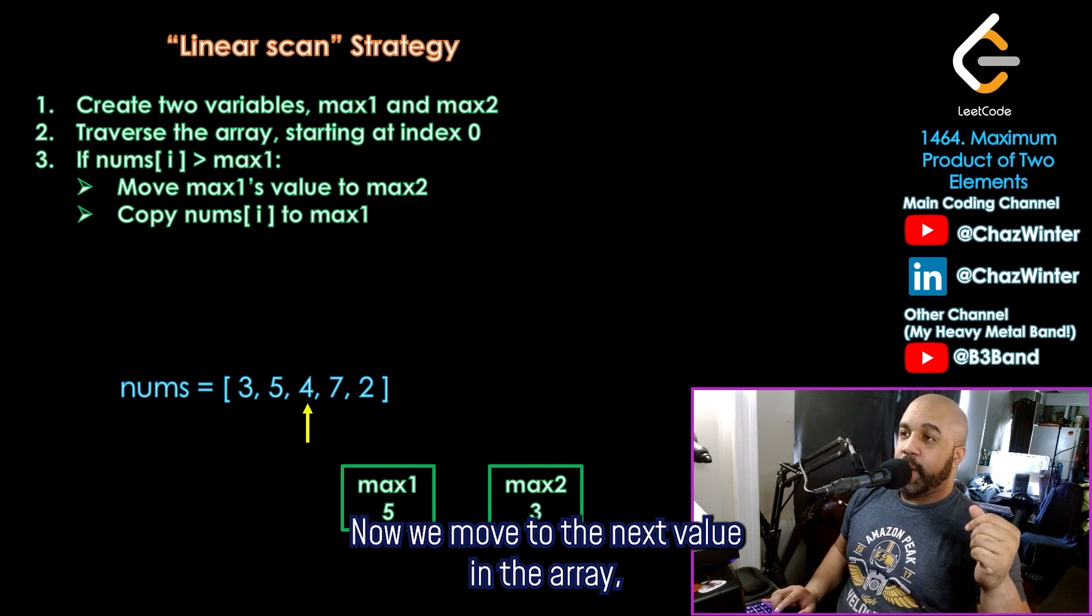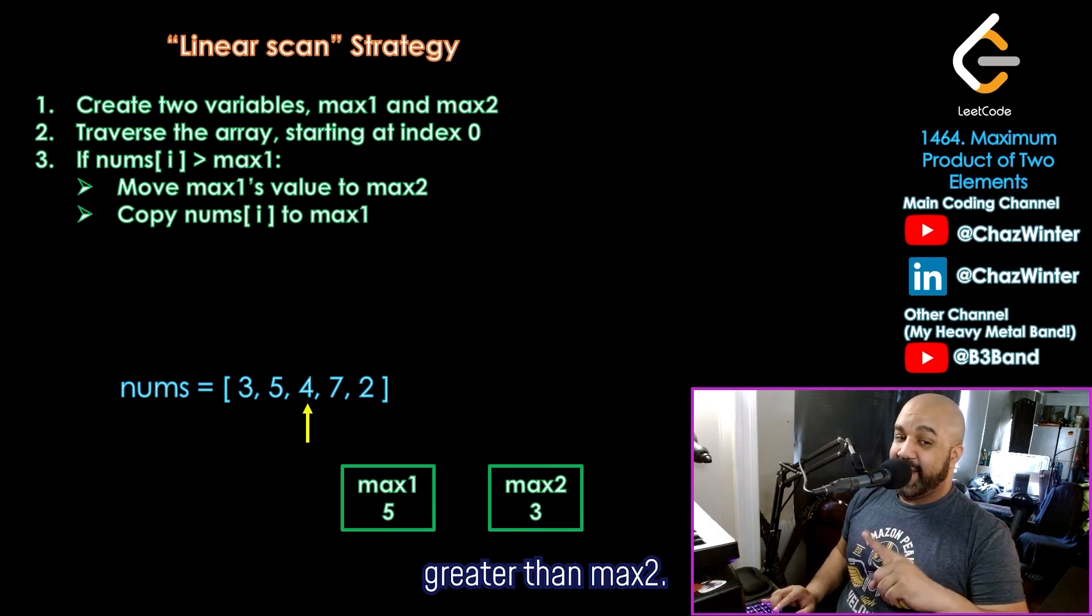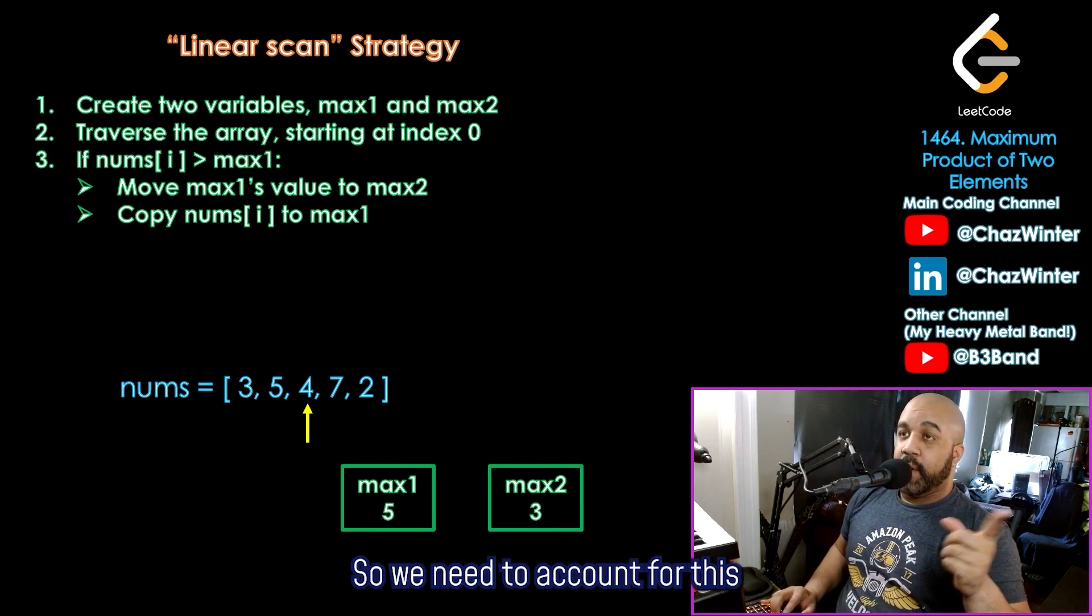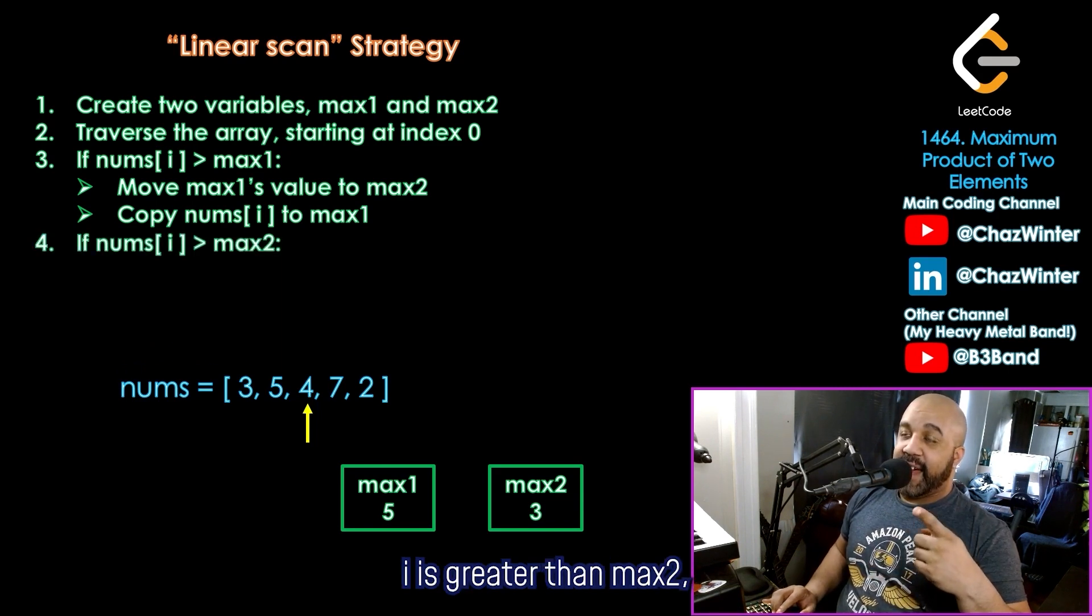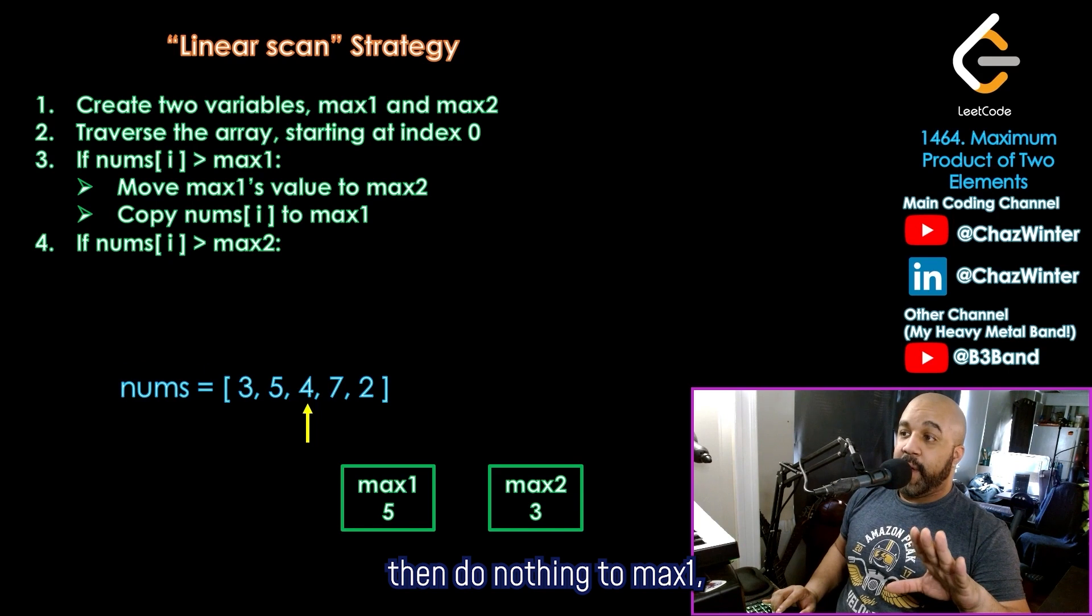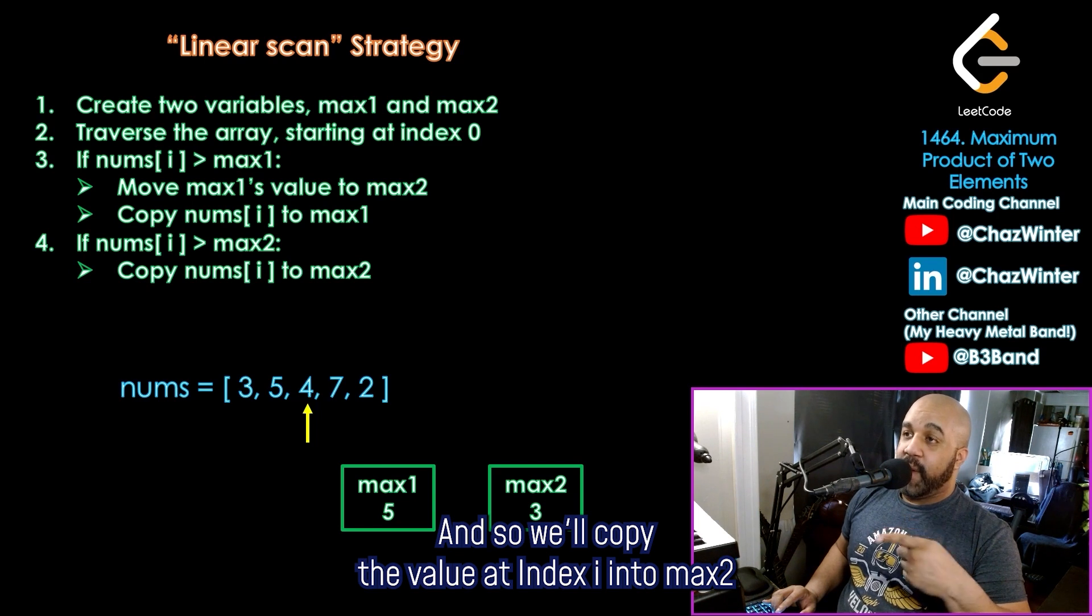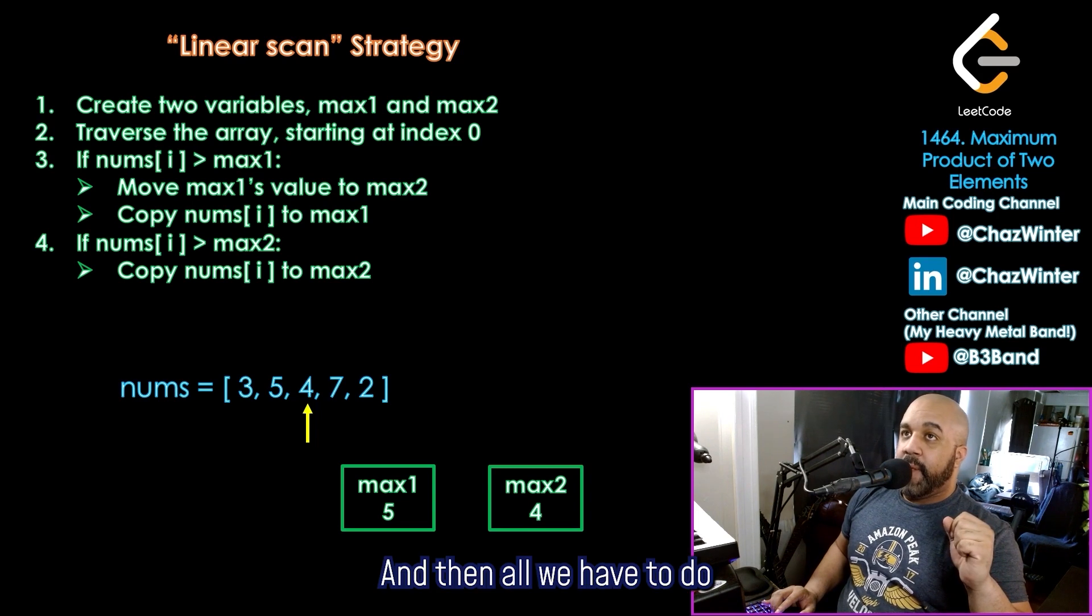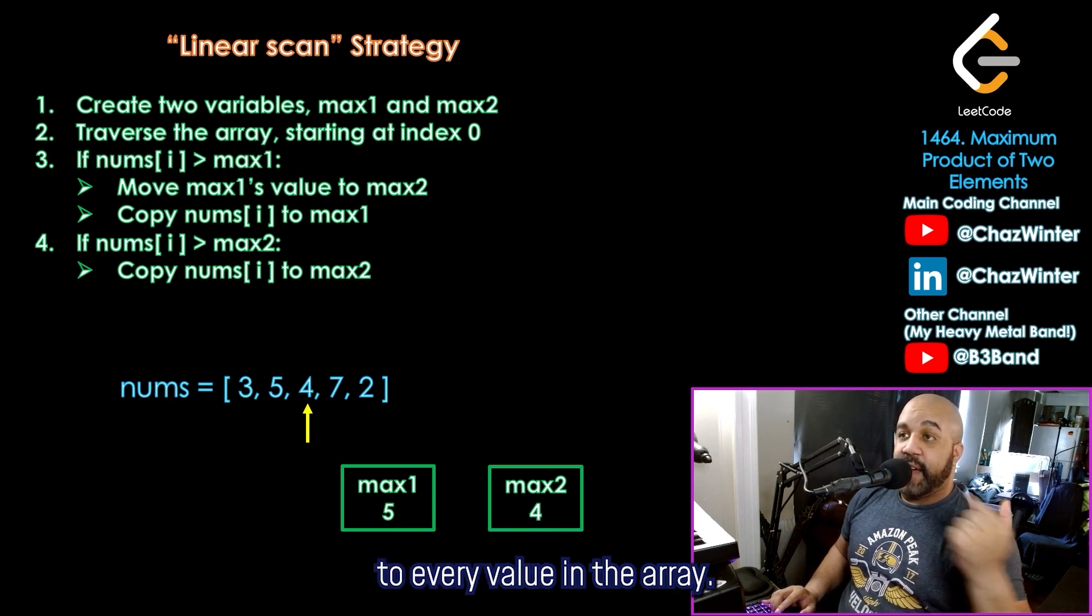Now we move to the next value in the array, and it is not greater than max one. But if you notice, it is greater than max two. So this really should be the second place value. So we need to account for this new situation. If the number at index i is greater than max two, then do nothing to max one, but we do have to change max two. And so we'll copy the value at index i into max two. So copy this four into the variable max two. And then all we have to do is take these steps and apply them to every value in the array.